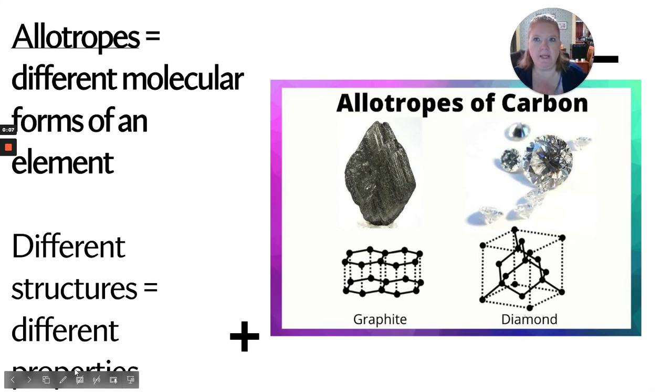Well, they are different molecular forms of an element, so the same element. It can't be carbon and oxygen—they have to be the same element, so carbon and carbon, oxygen and oxygen, phosphorus and phosphorus. But they have different structures, and different structures always indicates different properties.